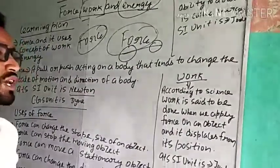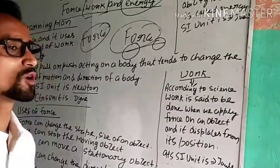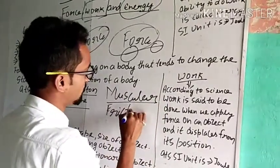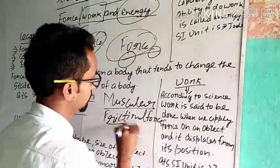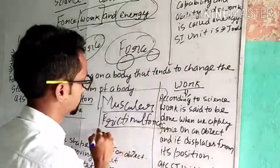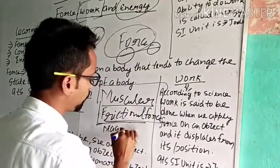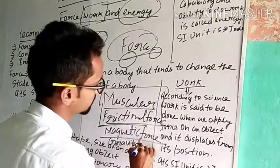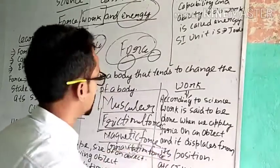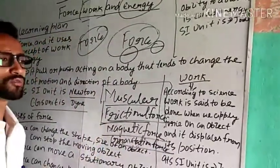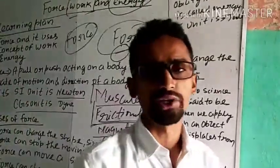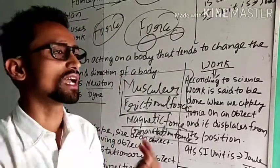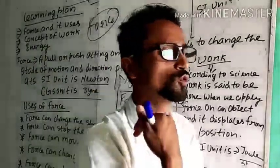Now talking about the types of force. There are different types of force, such as muscular force, frictional force, magnetic force, and gravitational force. Muscular force means the force that is generated by the muscles of our body. The force generated by our muscles is known as muscular force, and it is used to do different types of work.